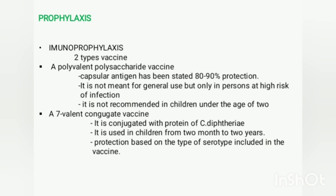The seven-valent conjugate vaccine contains streptococcal antigens combined with protein from Corynebacterium diphtheriae. It is used in children from two months to two years of age. Its protection mainly depends upon the serotypes included in the vaccine preparation. These are the two vaccines used for controlling streptococcal infection.